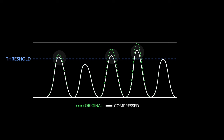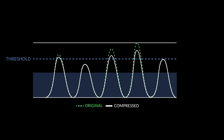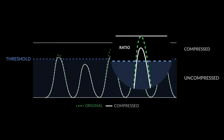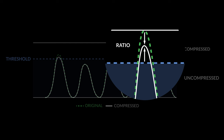And you decide what too loud is by setting the threshold. Anything below the threshold stays unprocessed. Anything above the threshold will be compressed. And you get to decide how much you want to compress this loud part by adjusting something called the ratio. Let me show you how this works.